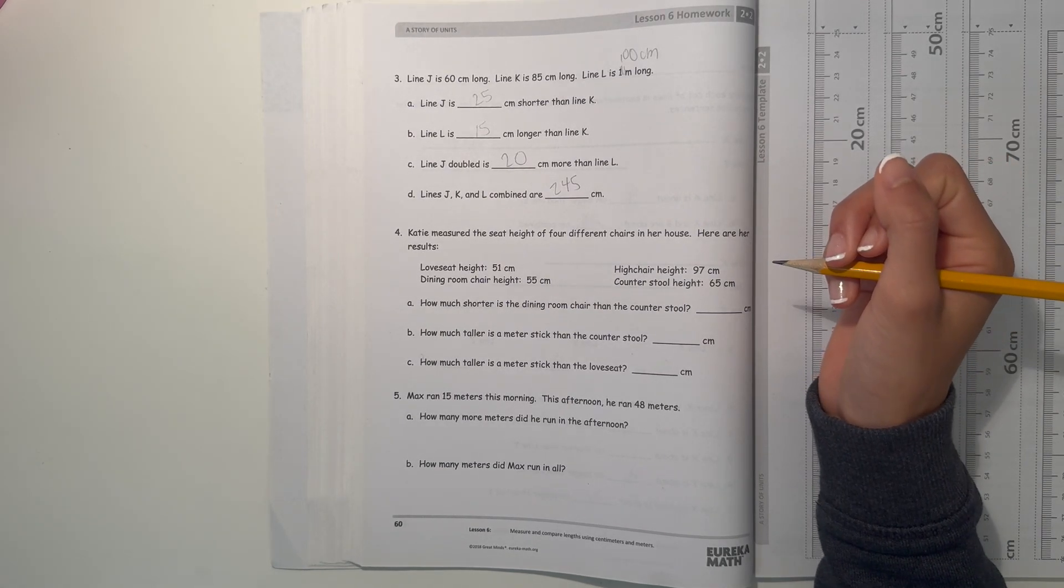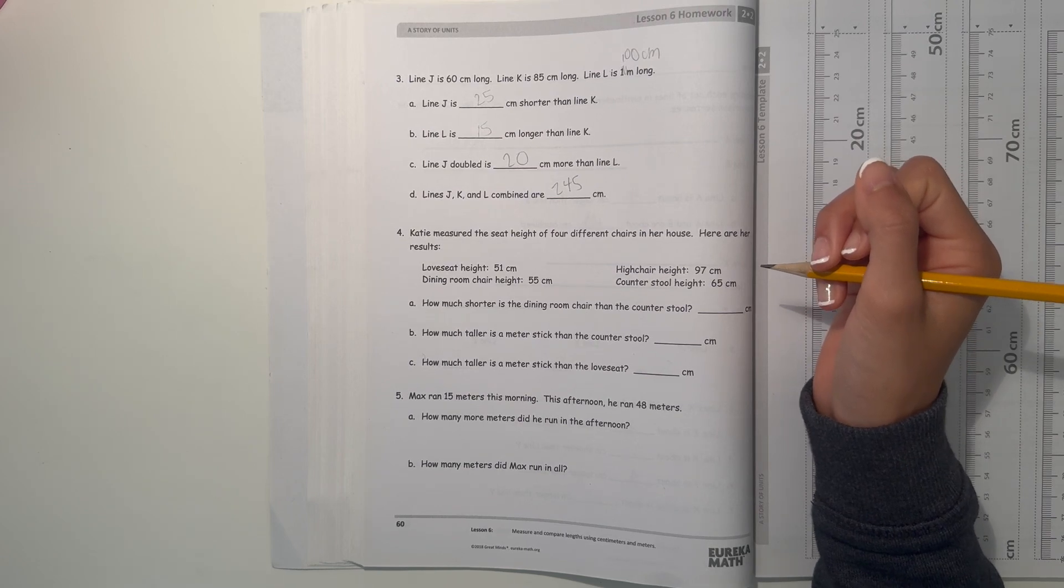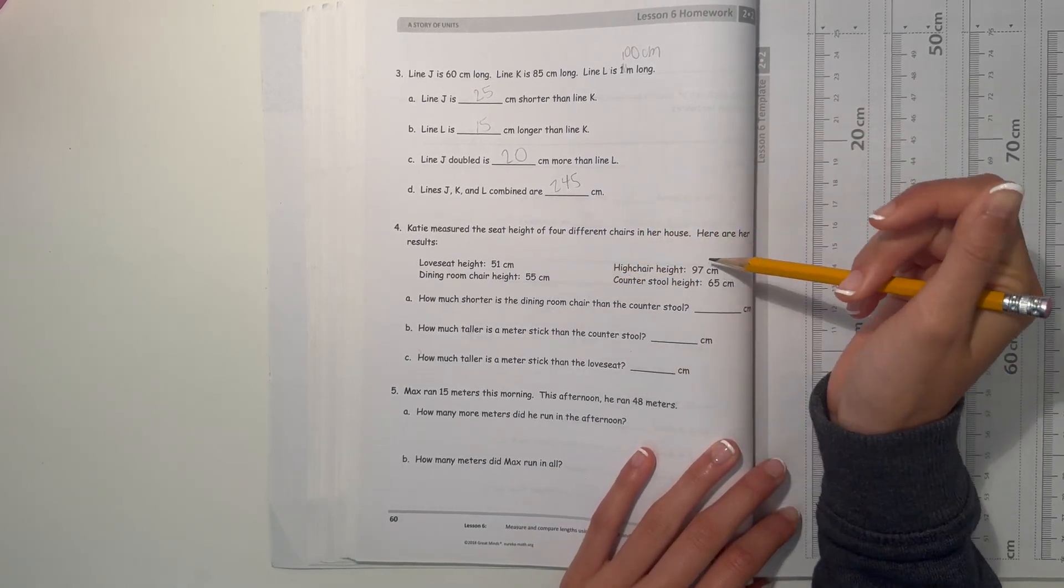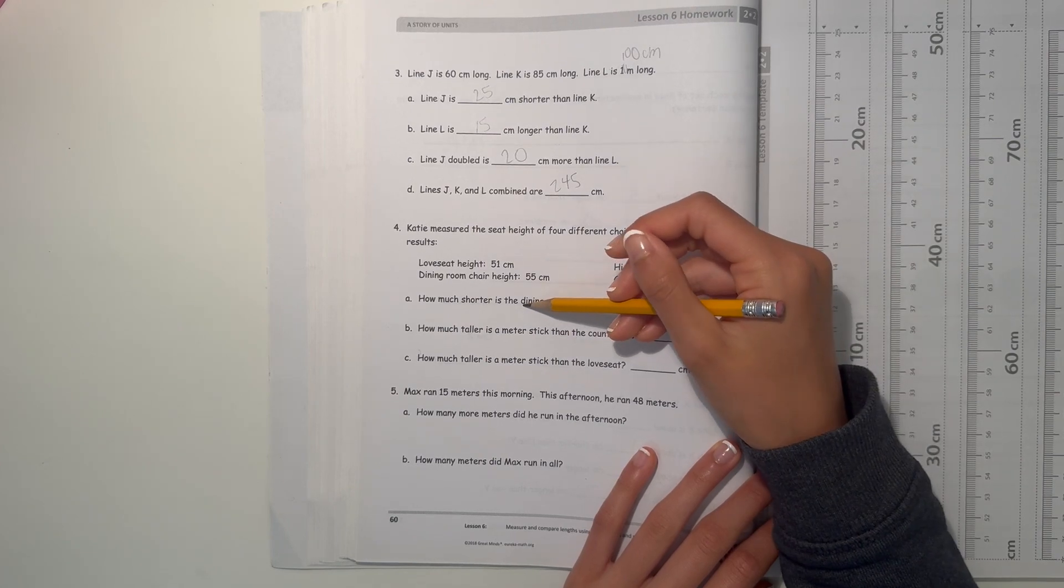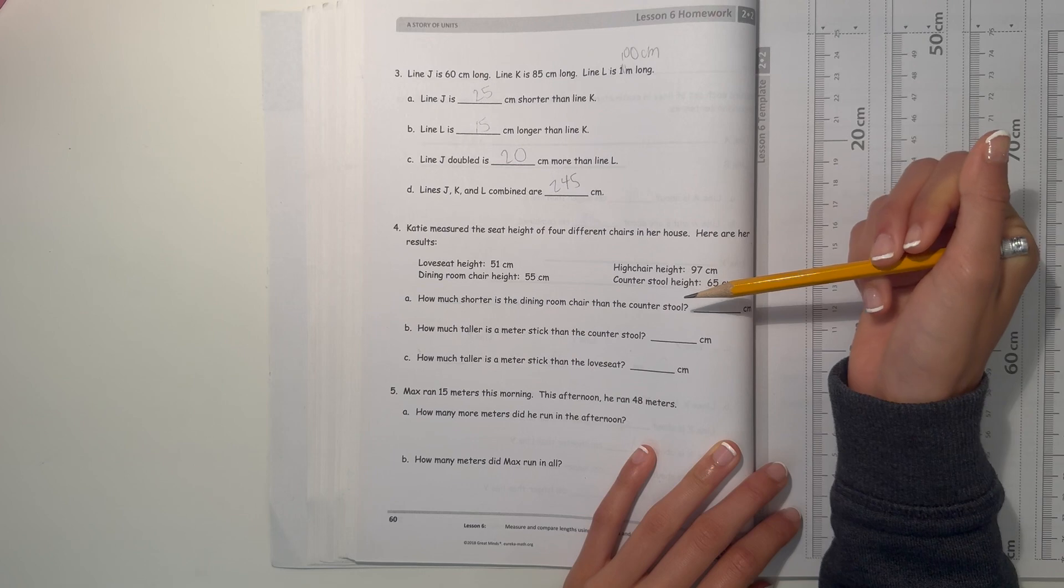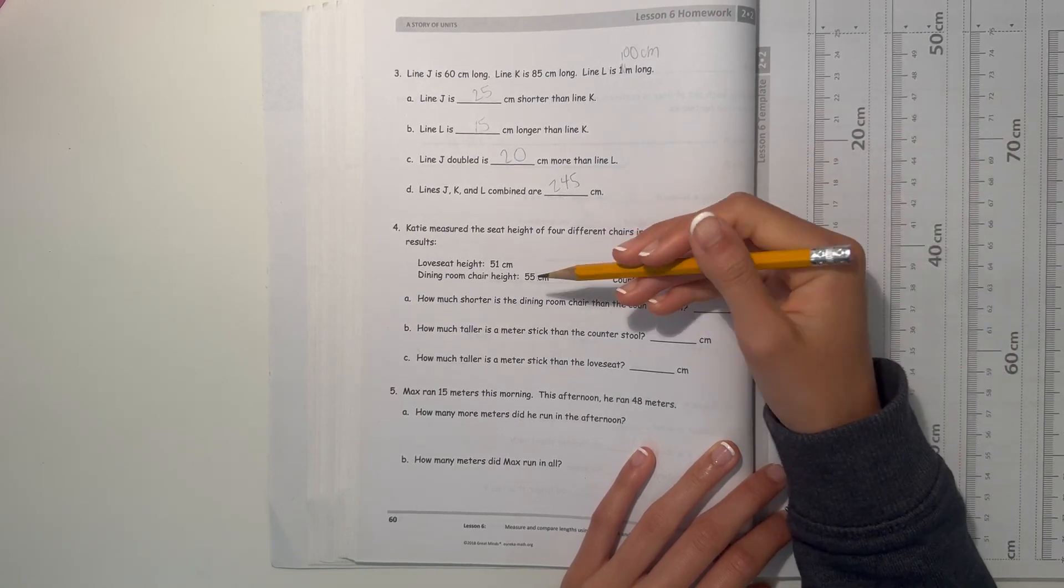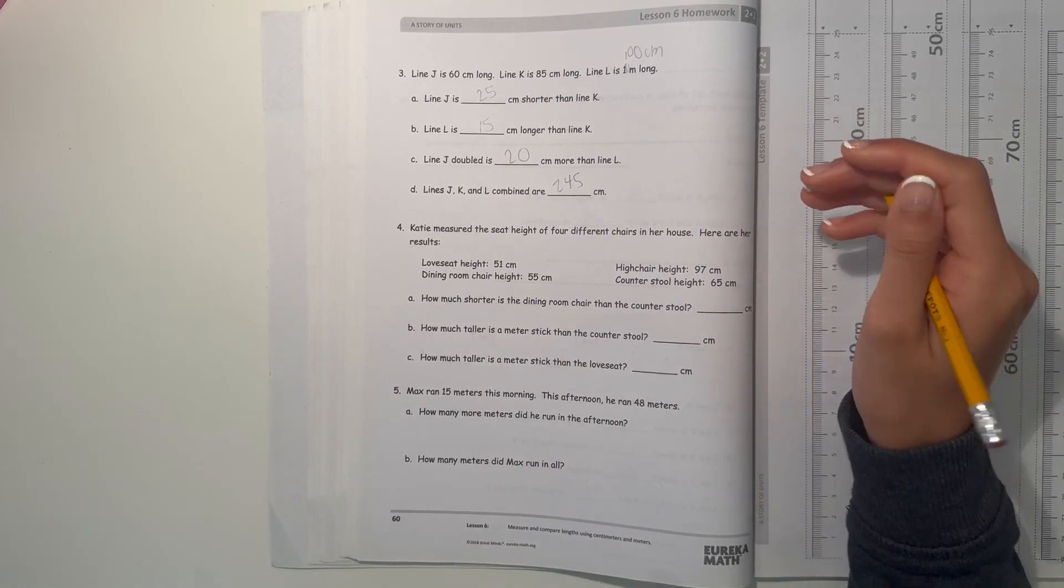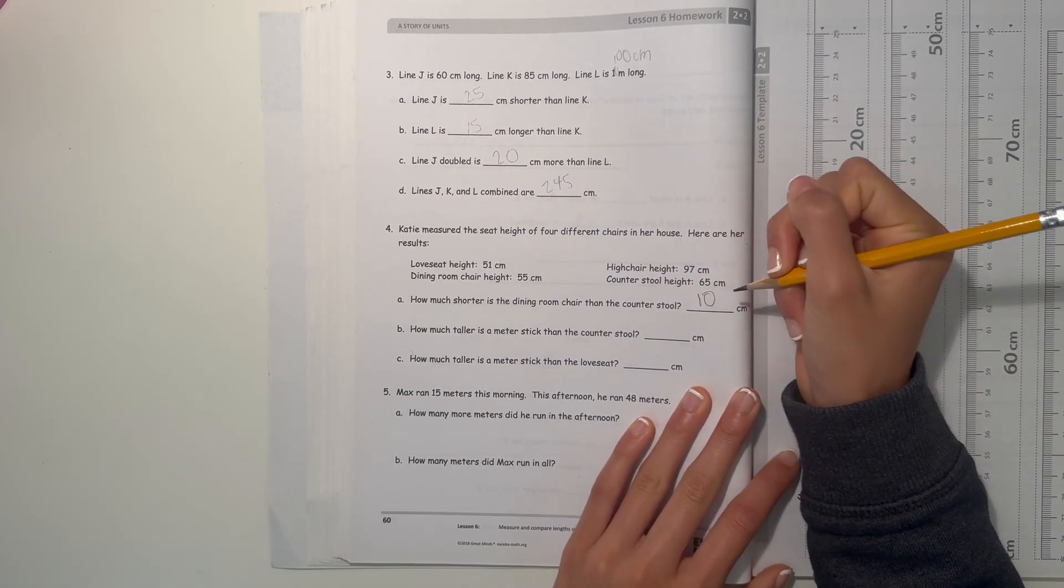Number 4. Katie measured the seat height of 4 different chairs in her house. Here are her results. So let's see, 51, 55, 97, and 65. How much shorter is the dining room chair than the counterstool? So 55 and 65. 6 tenths minus 5 tenths is 1 tenth. So then 65 minus 55 is 10. So it's 10 centimeters shorter.